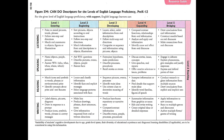Let's look at the can-do descriptor. The can-do descriptor lets you know what a student at a certain language proficiency level can do. This becomes particularly important when you talk about differentiating through product, because if you know what the student can produce, then you know what to request of the student.